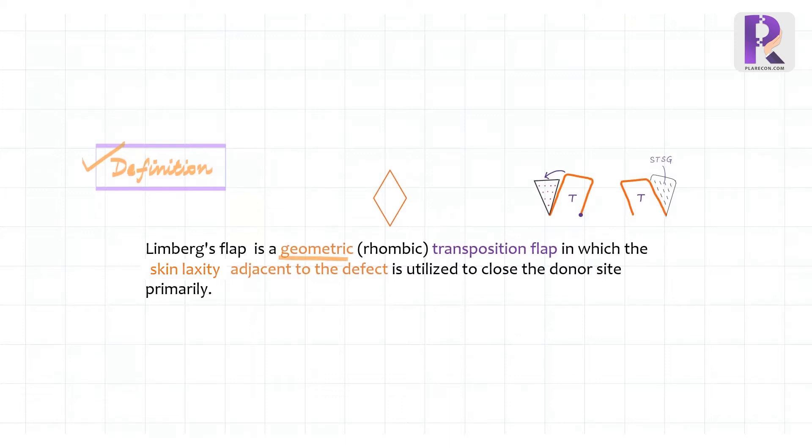Limburg flap is a geometric rhombic transposition flap in which the skin laxity adjacent to the defect is utilized to close the donor site primarily. A transposition flap in turn can be defined as a local flap consisting of skin and subcutaneous tissue which is lifted, rotated over intact skin, and placed over a non-contiguous defect.